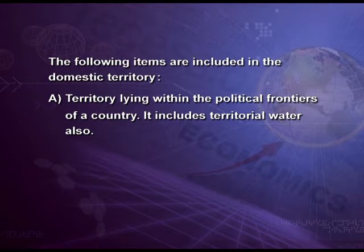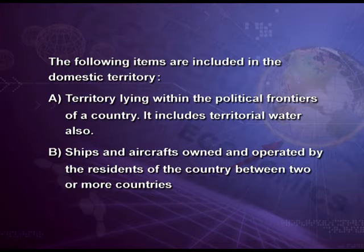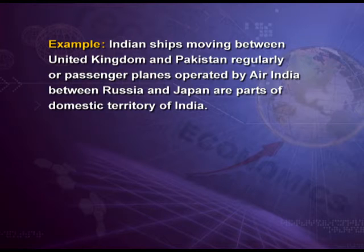The following items are included in the domestic territory. First, territory lying within the political frontiers of a country, including territorial waters. Second, ships and aircrafts owned and operated by the residents of the country between two or more countries. For example, Indian ships moving between the United Kingdom and Pakistan, or passenger planes operated by Air India between Russia and Japan, are parts of the domestic territory of India.